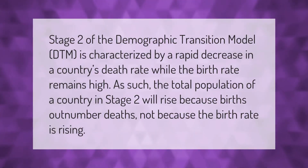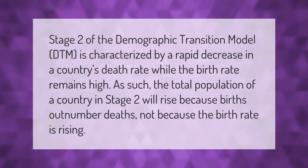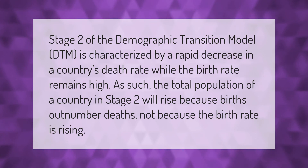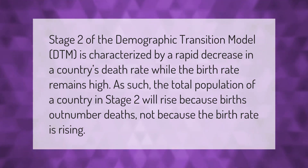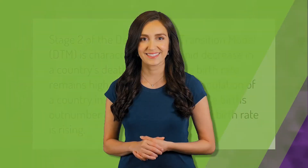Stage 2 of the Demographic Transition Model (DTM) is characterized by a rapid decrease in a country's death rate while the birth rate remains high. As such, the total population of a country in Stage 2 will rise because births outnumber deaths — not because the birth rate is rising.